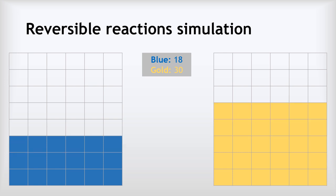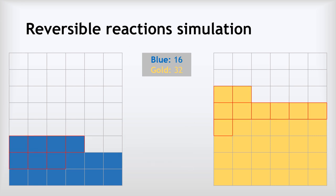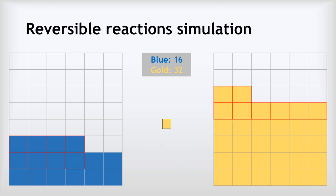Next round: half of our 18 blues will turn gold — that's 9 changes — and a quarter of our 30 golds, rounded down, is 7 turning blue. That leads to 16 blues and 32 golds. Now, half of our 16 blues turn gold — that's 8 — and a quarter of our 32 golds turn blue — that's also 8. So 8 blues turn gold and 8 golds turn blue. Overall, there's no change: we've still got 16 blues and 32 golds.